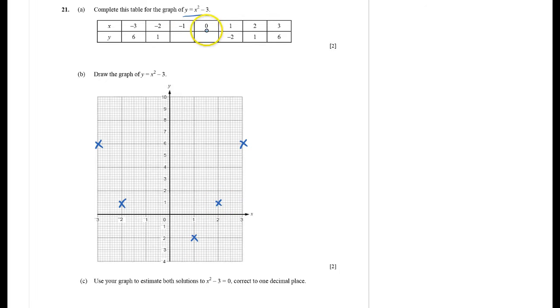So I need to do minus 1 or 0. I'm going to do 0 first. 0 squared is nothing. Take away 3, that is minus 3. So 0 is minus 3.